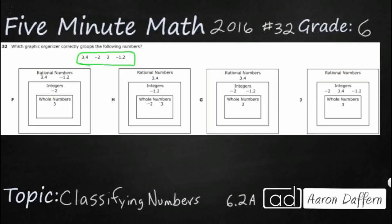Where do those go on a graphic organizer for classifying numbers? As you can see, each of these answer selections have three different options. We've got the whole number, the integer, and then the rational.